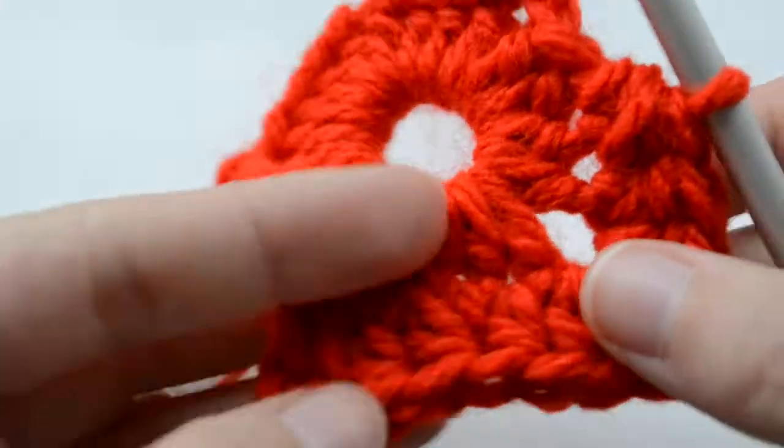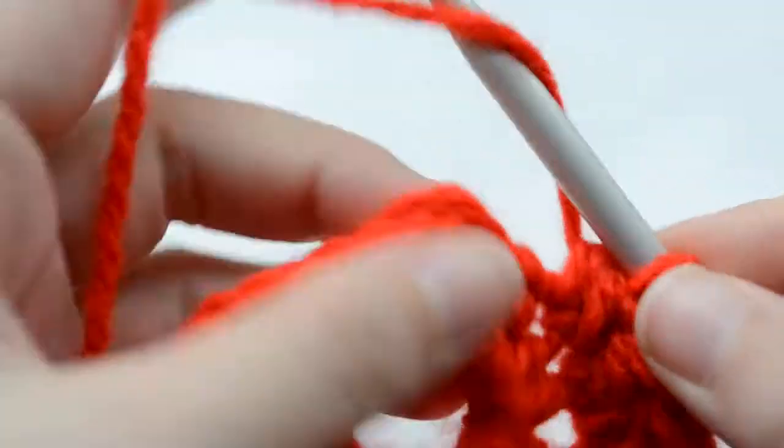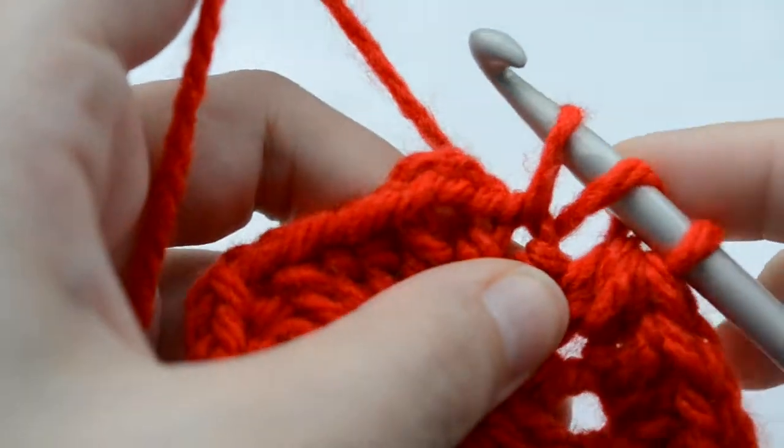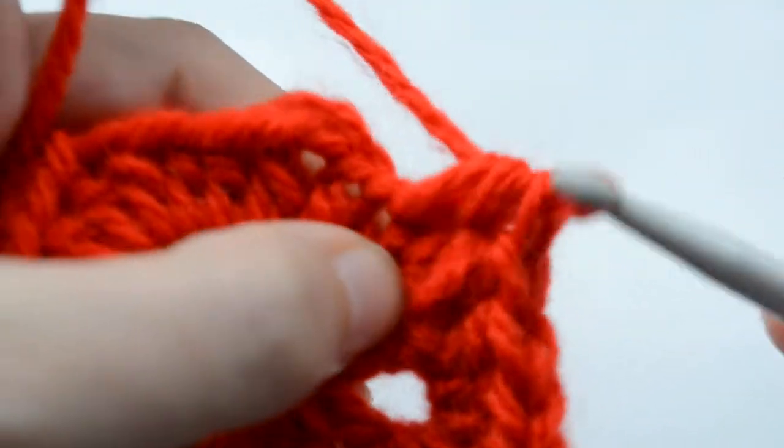This is creating a decrease. Now work up a normal half double crochet.